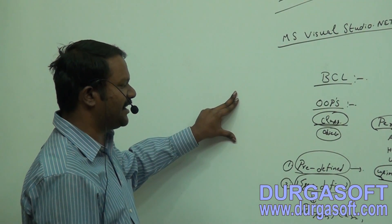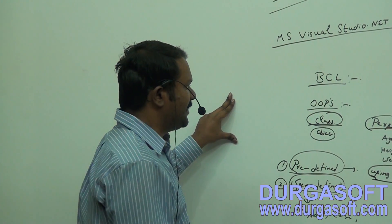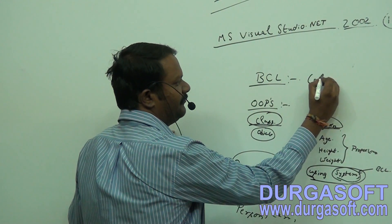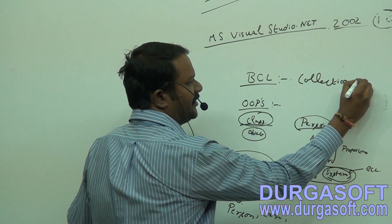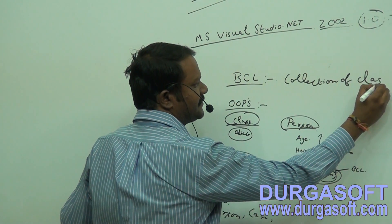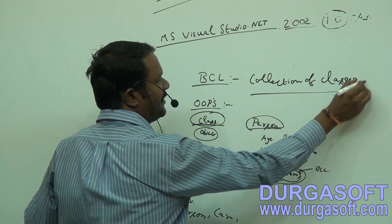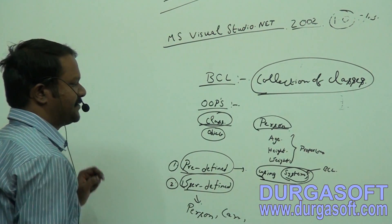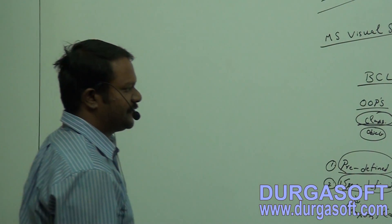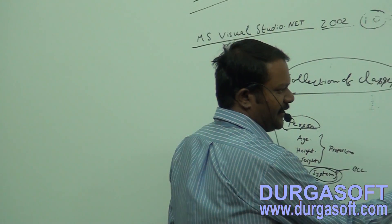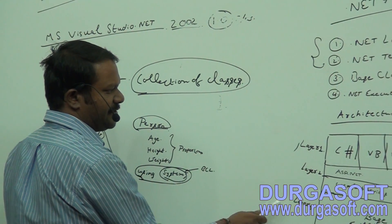Without Base Class Libraries, we cannot work — it is nothing but a collection of classes. So to summarize, we have discussed .NET Languages, .NET Technologies, and Base Class Libraries. The .NET languages include C Sharp, VB, VC++, Visual J Sharp, Visual Fox Pro, and others.